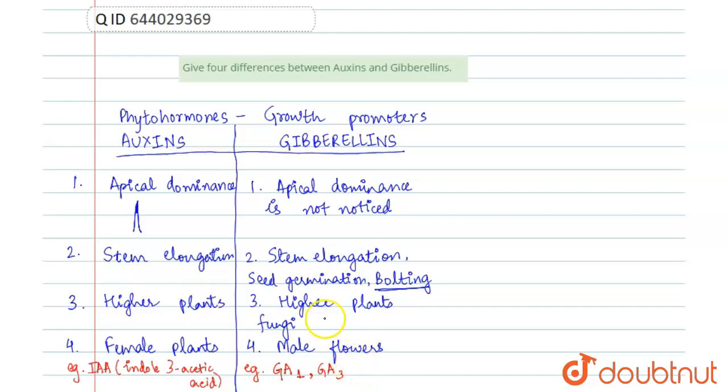So auxins and gibberellins are both growth promoters, and while their effects are similar in some ways, they differ in key aspects. Hope this helps. Thank you.